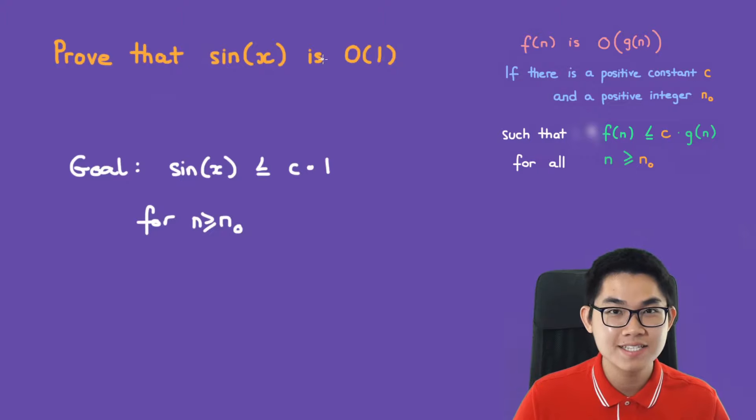Prove that sine of x is O(1). So our goal is to show that there is a constant c and n naught such that this inequality here is true.